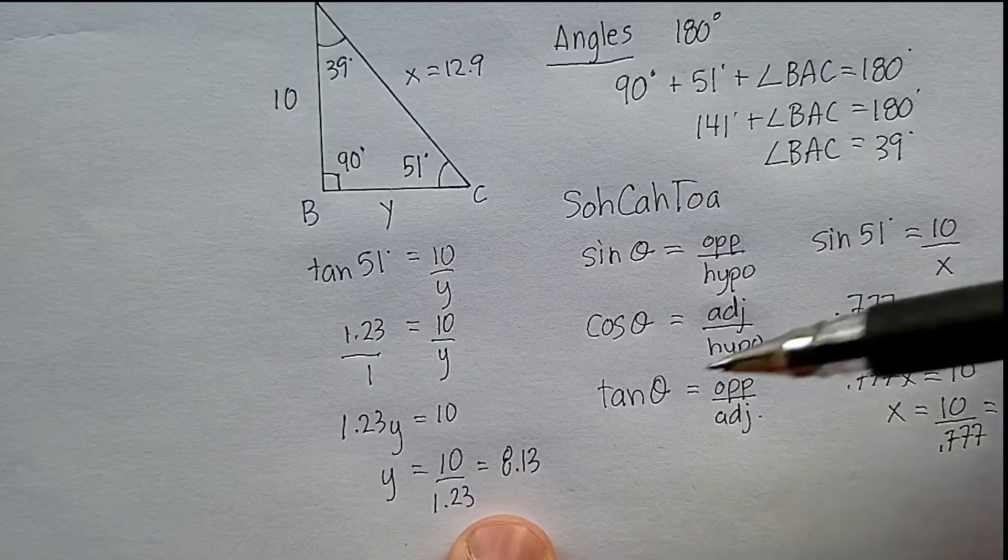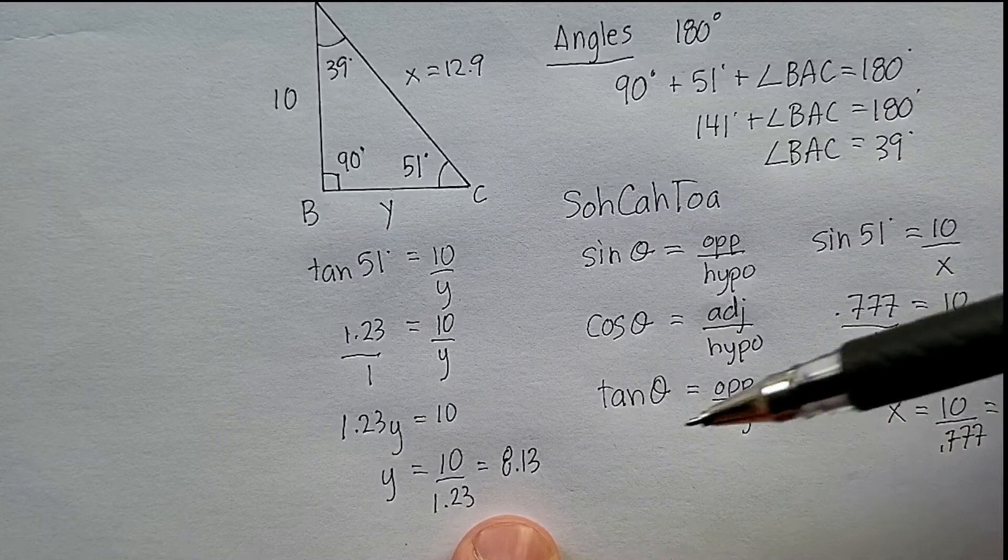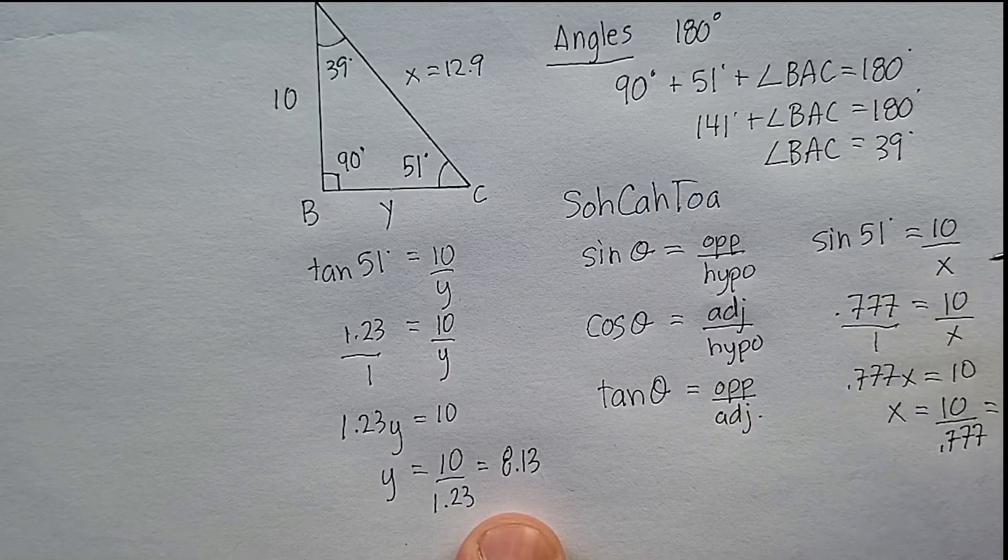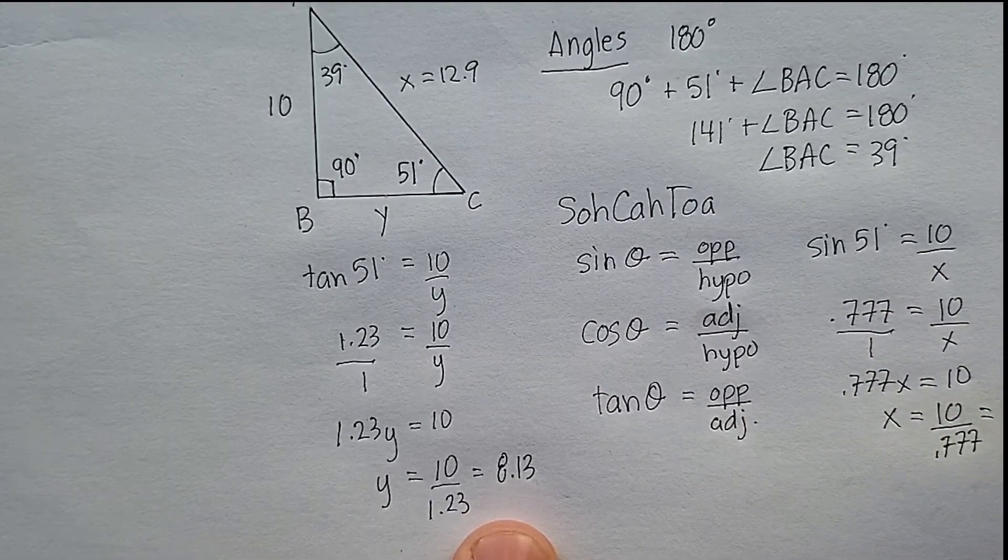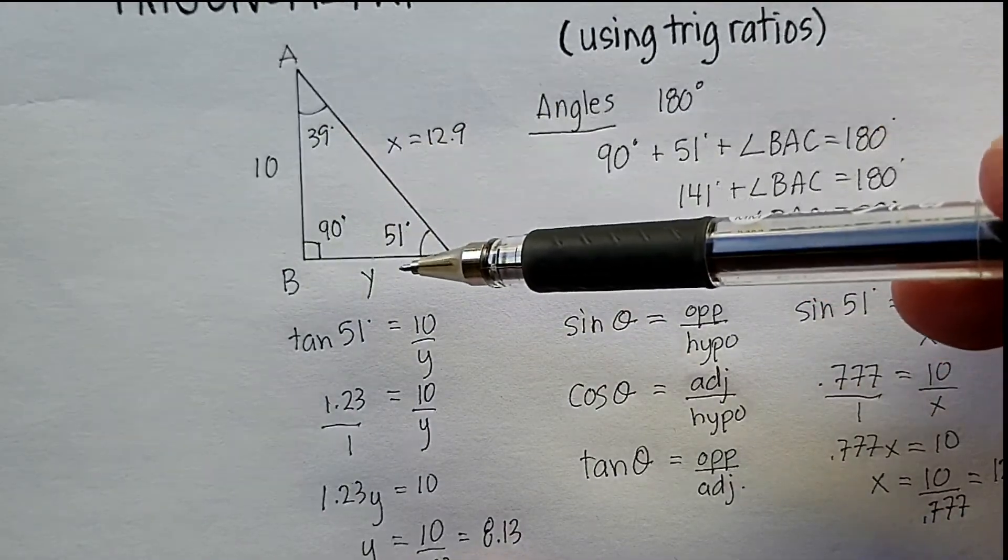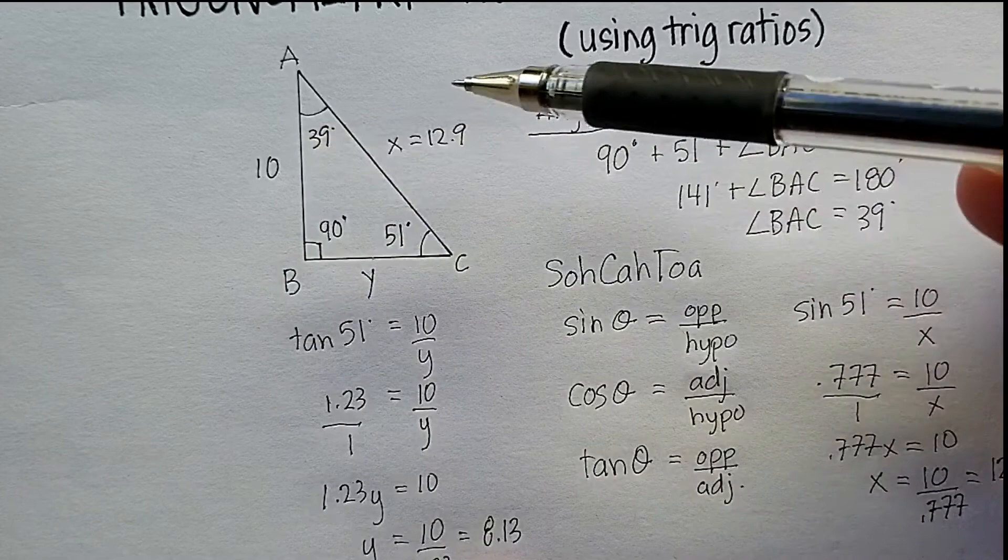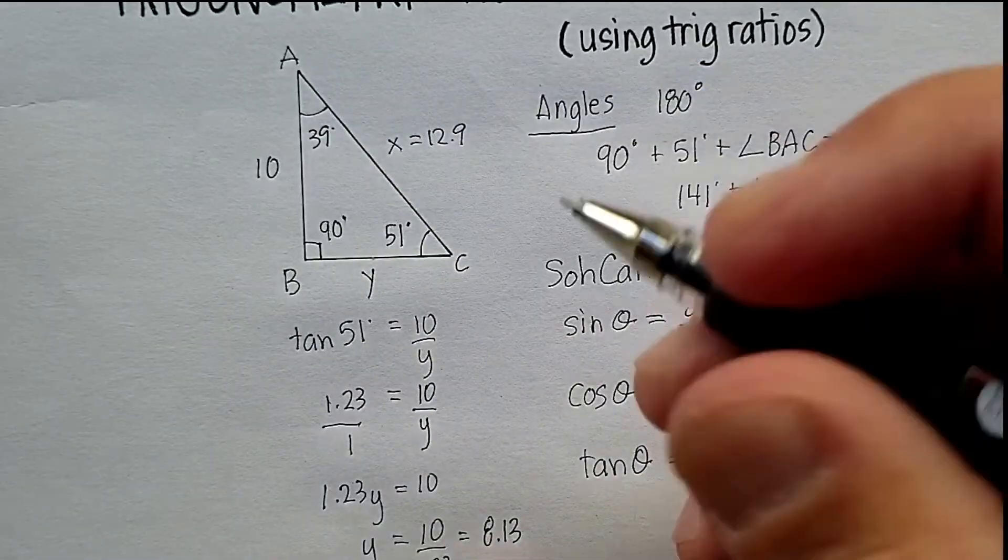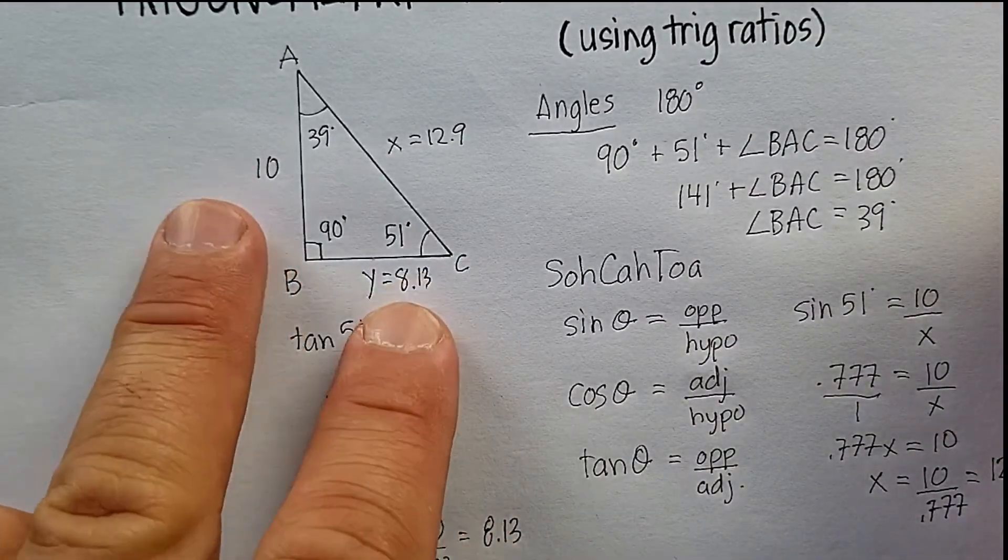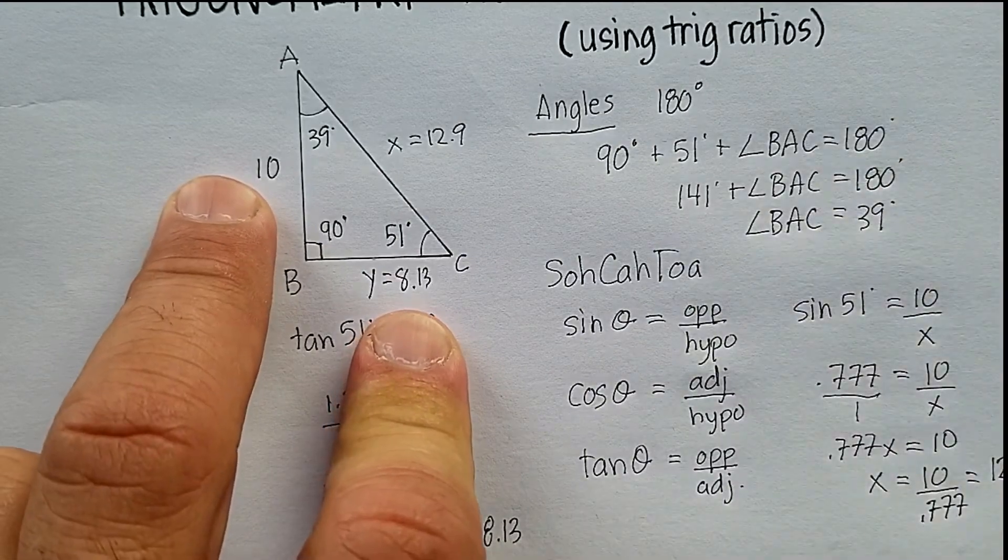And again, I'm using three figures, even though technically we should only be using two significant figures, but I just wanted to show you these ratios. So, we've just solved this triangle. We figured out each of the angles and we figured out each of the sides of the triangle as well. And you can make sure that it's correct by using the Pythagorean theorem and see if these numbers actually work. Okay, hope that was helpful to you.